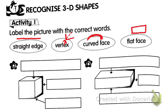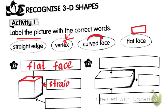Look at A, a picture of a cube. This is what we call flat face. This one, what do we call it? Straight edge. How about this one? It's a vertex.